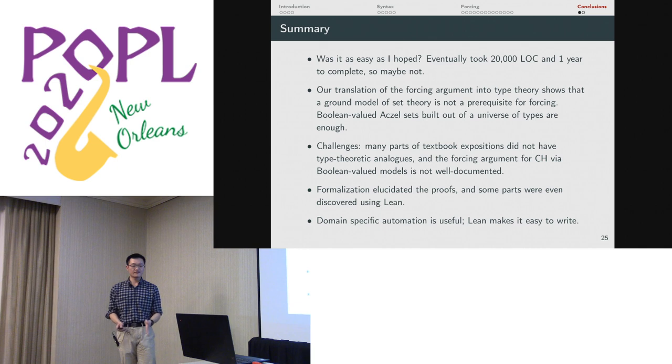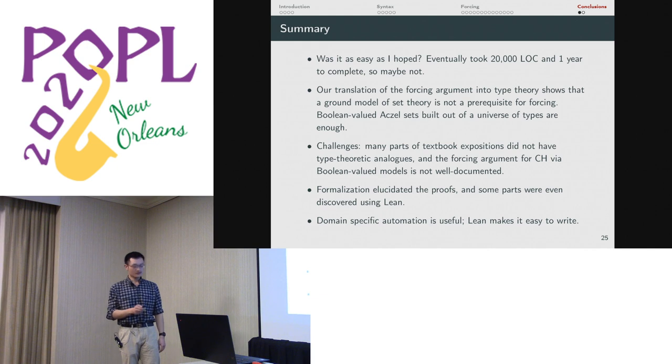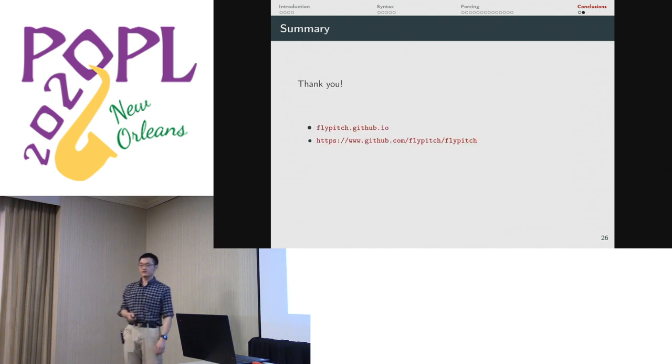We had to overcome the fact that all the accounts of forcing are done in set theory. And so we have to figure out exactly what parts of the arguments are the mathematical parts that can be translated into type theory and what parts of them are just purely set theoretic. Lean really helped. When we were trying to translate all this, the automation helped. And being able to write our own tactics like we did for Boolean-valued logic was absolutely crucial. Thank you for your attention.